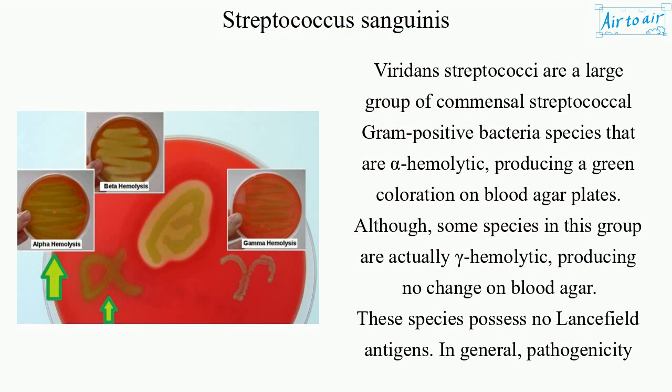Viridans streptococci are a large group of commensal streptococcal gram-positive bacteria species that are alpha-hemolytic, producing a green coloration on blood agar plates. Although some species in this group are actually gamma-hemolytic, producing no change on blood agar. These species possess no Lancefield antigens, and in general, pathogenicity is low.